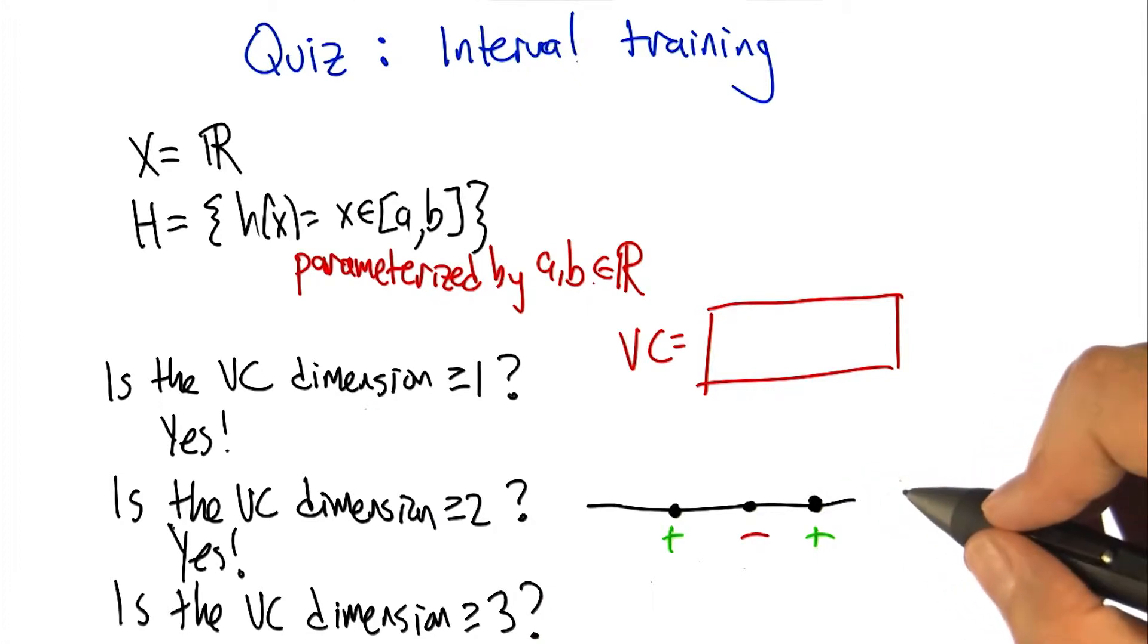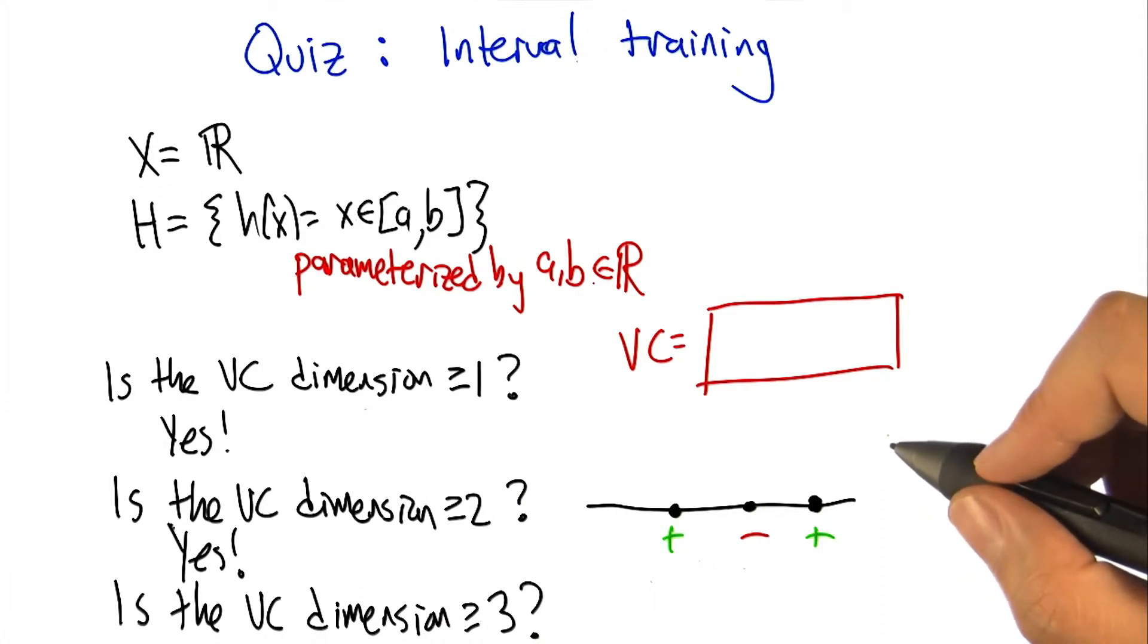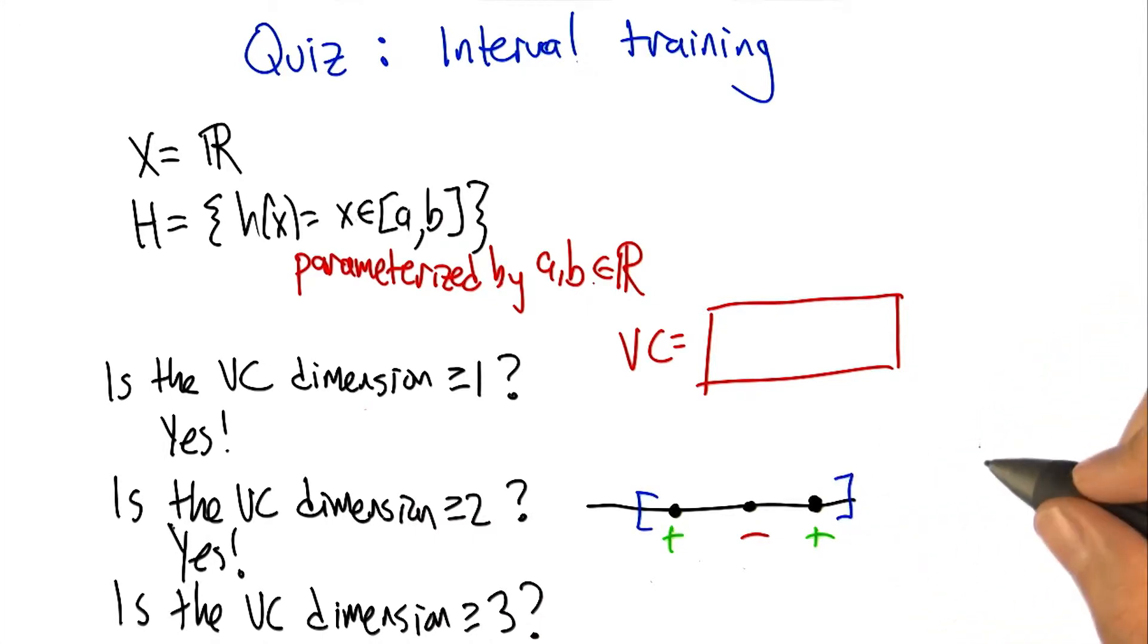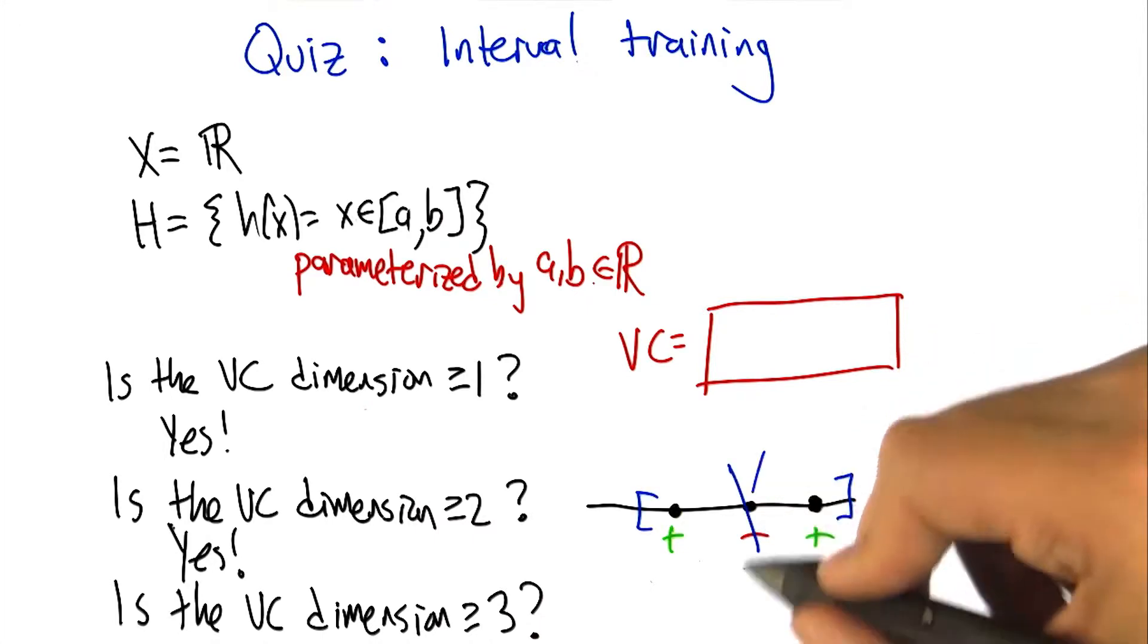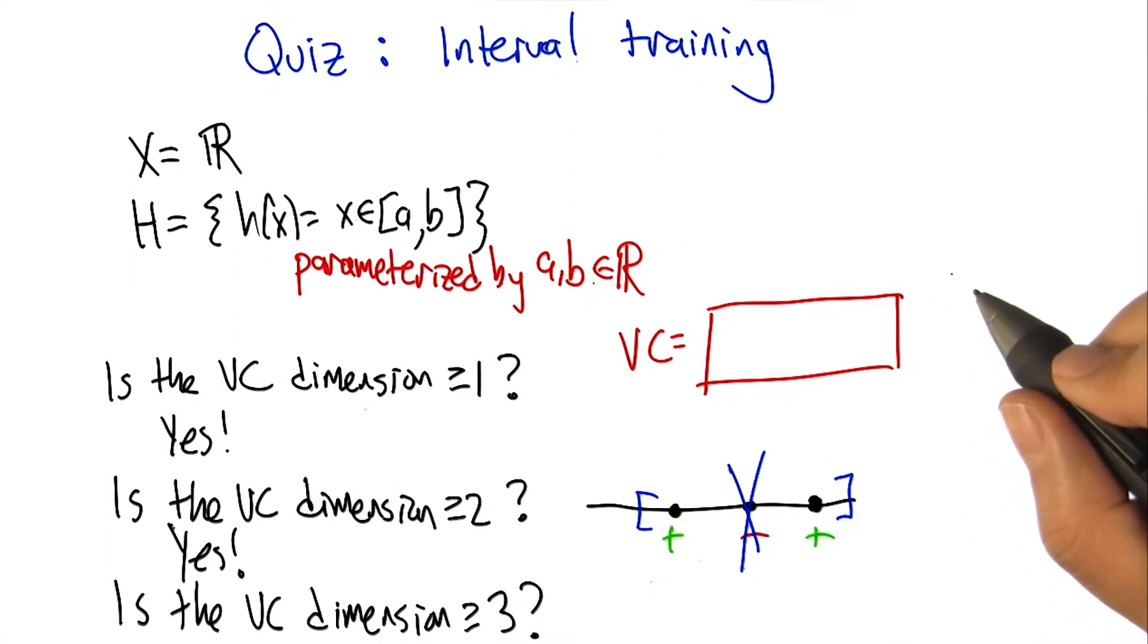And that's because in order to get point 1 and point 3 in the interval, you're going to have to put the brackets on both sides of them. So you're going to have to put a left bracket to the left of the first point, and a right bracket to the right of the third point. And that's the only way to make those two plus, but then you're always going to capture the one in the middle. So you can't actually shatter three points with this hypothesis class.